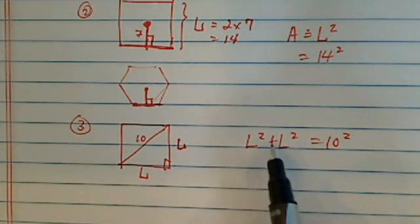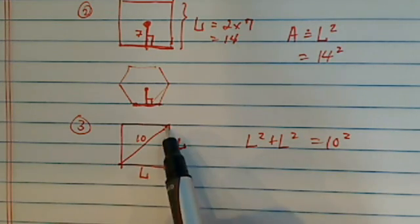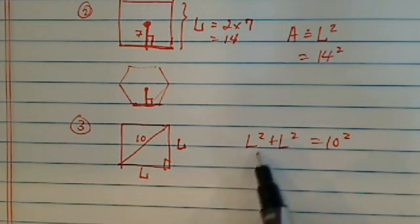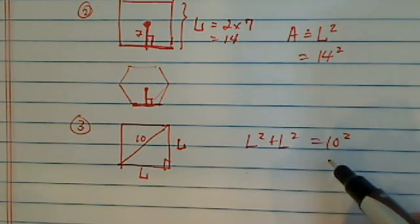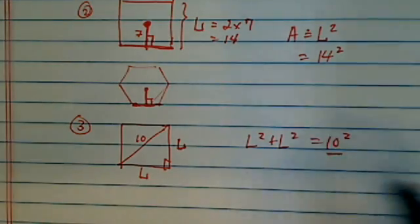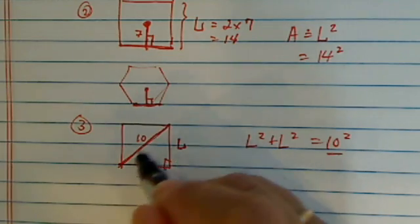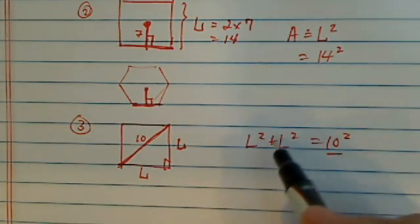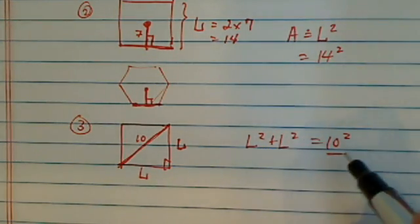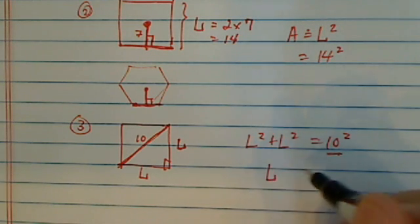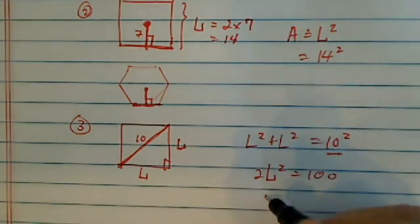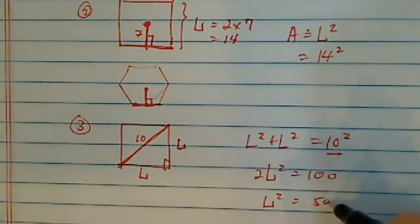So basically, it says sum of the two short legs. When you add them together, sum of the square of the two short legs is equal to the hypotenuse. This one always looks to me like a roof. So two short legs squared, add them together, equal to the roof squared. From here, you'll see 2L squared is equal to 100. So L squared is equal to 50.